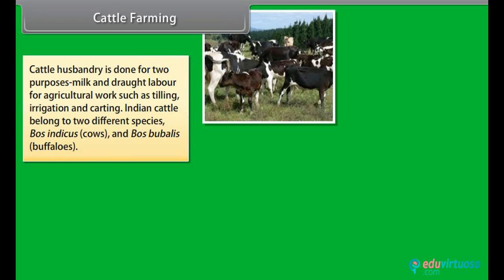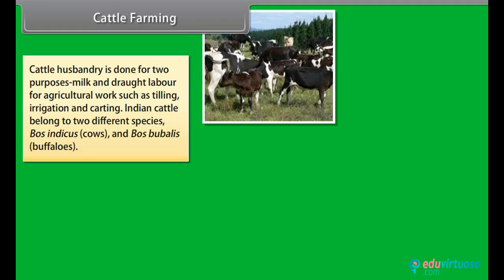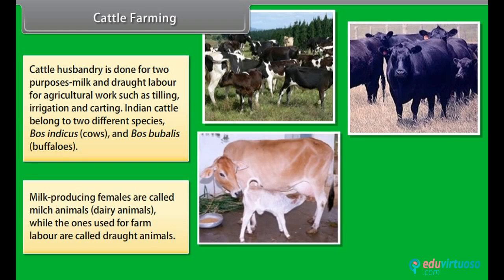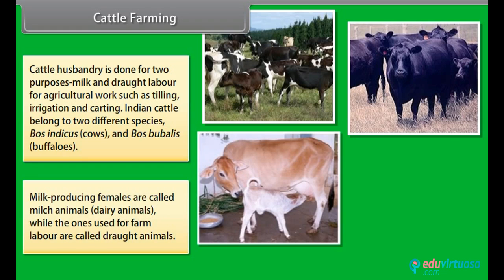Cattle husbandry is done for two purposes: milk production, and drought labour for agricultural work such as tilling, irrigation and carting. Indian cattle belong to two different species — Bos indicus (cows) and Bos bubalis (buffaloes). Milk-producing females are called milch or dairy animals.